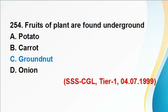Question 254: Fruits of plants found underground — answer C is correct, groundnut. Peanuts or groundnuts belong to the family of legumes. Fruits are structures developed from the ovary at the base of the flower. Peanuts are fruits that develop underground, so answer C is correct.